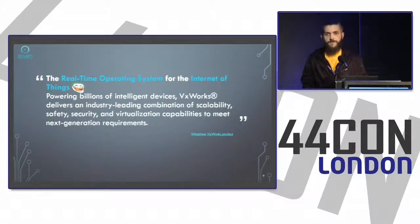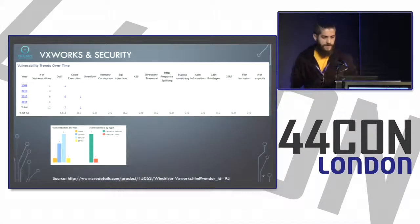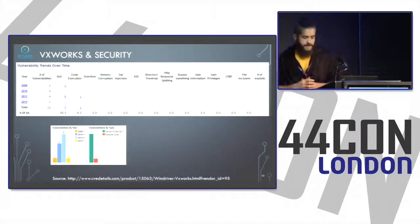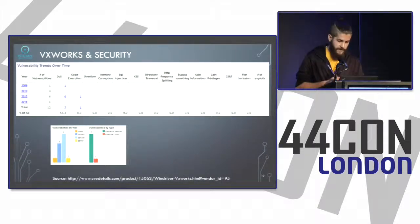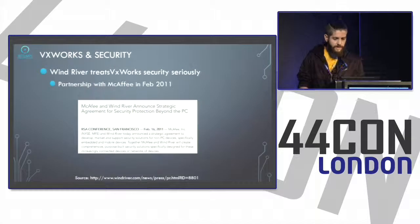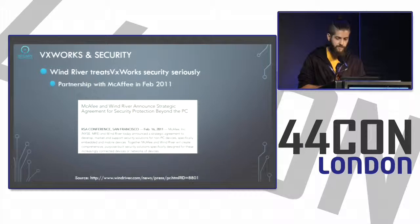We chose to study VxWorks partly because it has very few documented vulnerabilities — only 12 CVEs have been issued, seven of which are denial of service and one is code execution. Wind River treats VxWorks security seriously. For example, in 2011 they announced a partnership with McAfee to improve OS security.